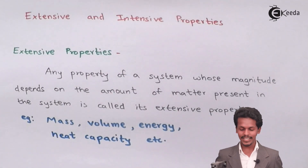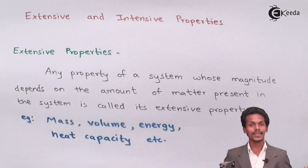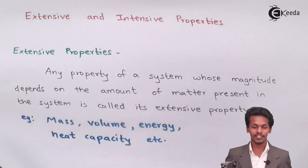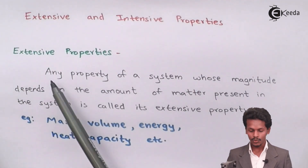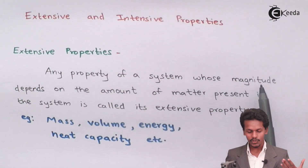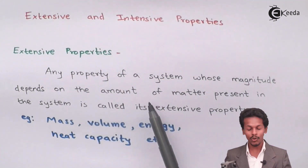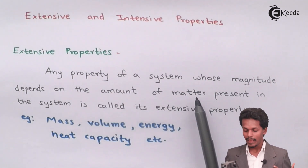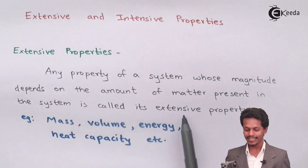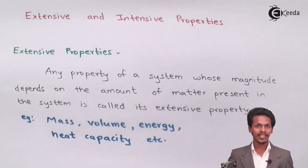Talking about the first one, that is extensive property — any property of a system whose magnitude depends on the amount of matter present in the system is called an extensive property.